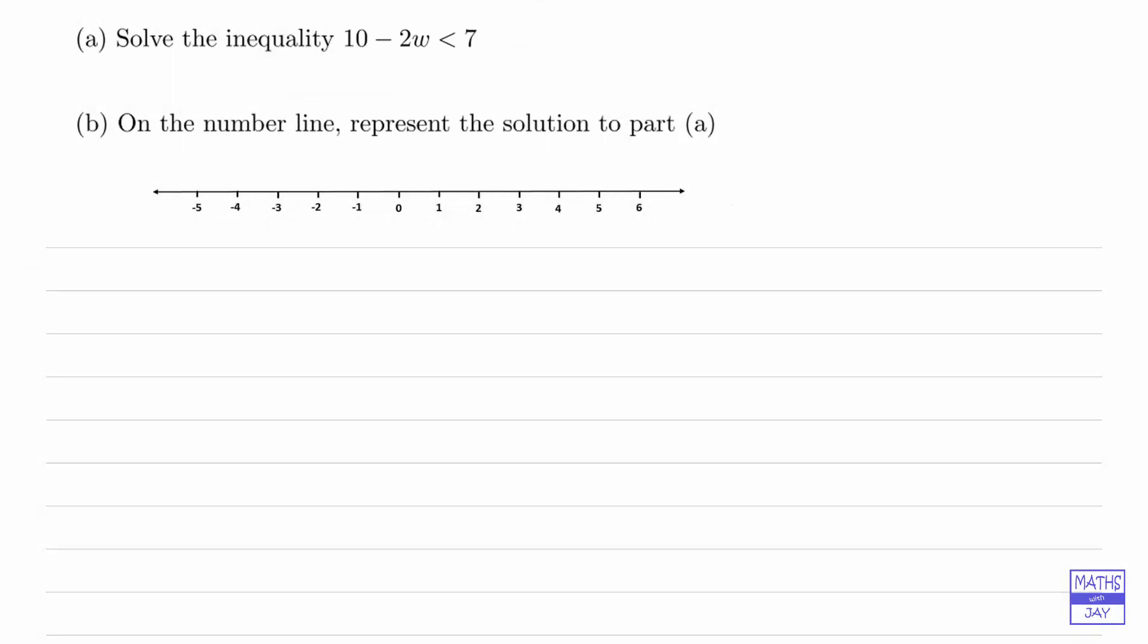Because this is a bit tricky with a negative coming before the unknown, I will show you three different ways of solving this inequality and then it's up to you to choose the method you like to use. You only need to use one method when you're doing an exam question like this. And then we'll do the usual two checks and then show the answer on the number line.